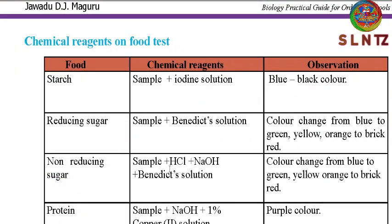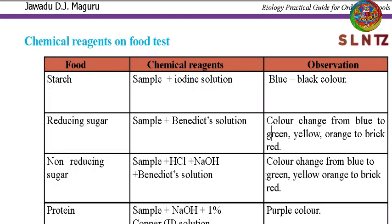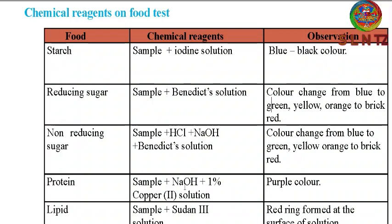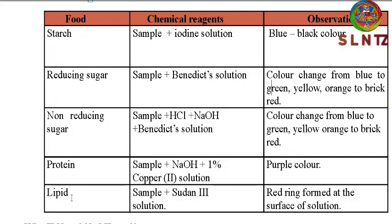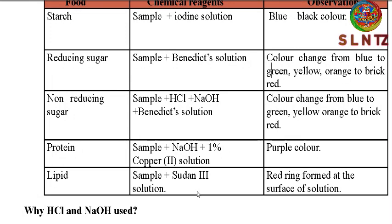For non-reducing sugar, you need the sample, hydrochloric acid, sodium hydroxide solution, and Benedict's solution. The observation is the same color change — from blue to green, yellow, orange, to brick red. For protein: use sodium hydroxide and one percent copper (II) sulfate solution; the positive observation is a purple color. For lipid: use Sudan III solution and observe a layer or ring formed at the surface of the solution.